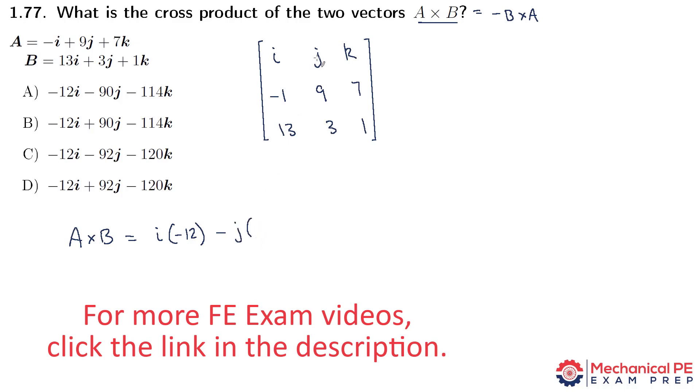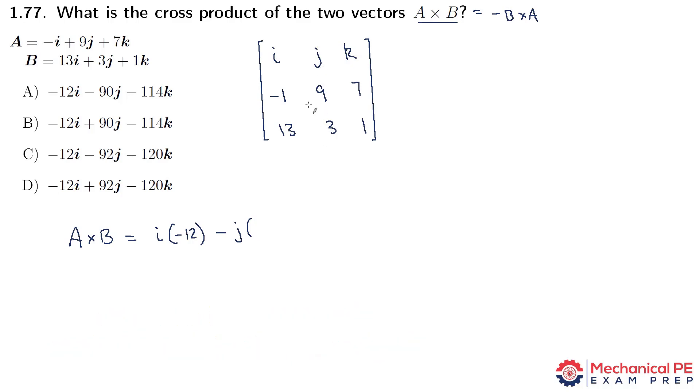And now using a very similar method, we cross out the first row and we cross out the middle column. So we end up with minus 1 and 1 and 7 and 13. So we're doing the discriminant of that 2 by 2 matrix. So minus 1 times 1 is minus 1 minus 7 times 13, which is 91. So this one I actually have to write down. Minus 1 minus 91. Minus 92.